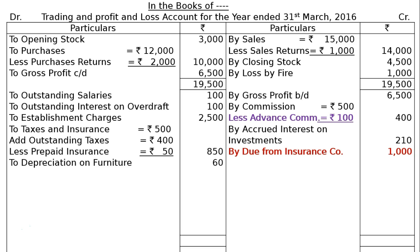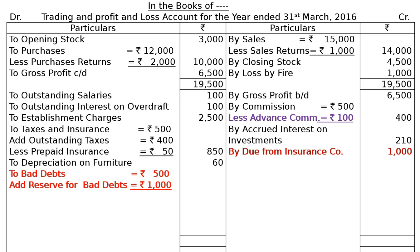Depreciation on Furniture: Adjustment E states depreciation is to be charged at 10%. So 10% of Rs. 600 is Rs. 60. Next, Bad Debts of Rs. 500 are given in the trial balance. Adjustment D states a bad debt reserve is to be maintained at Rs. 1,000. So: Bad Debts Rs. 500 plus new Reserve for Bad Debts Rs. 1,000 equals Rs. 1,500, less old Bad Debt Reserve Rs. 1,000 (from trial balance credit column), giving Rs. 500 in the final column.